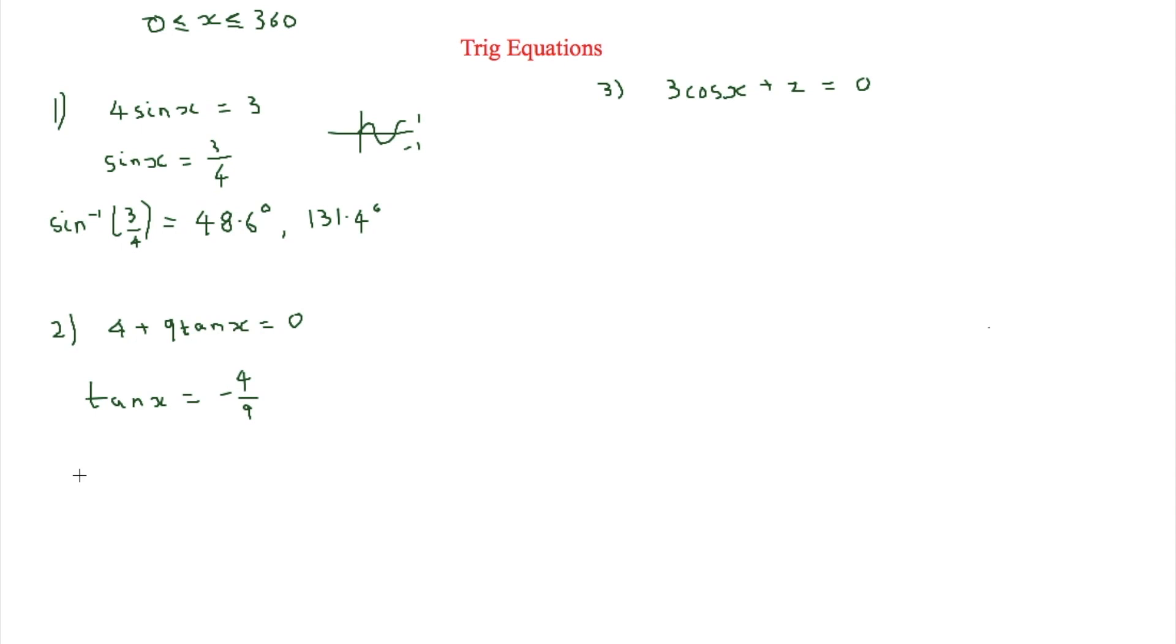Once again, what we'll do is x is going to be equal to tan to the minus 1, which is found by pressing shift tan on your calculator, and then minus 4 over 9. Now therefore, we can find out here that x is equal to minus 24.